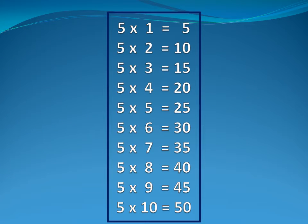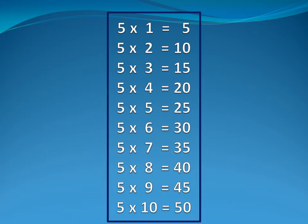Now five tables. Five one is five. Five two is ten. Five three is fifty. Five four is twenty.